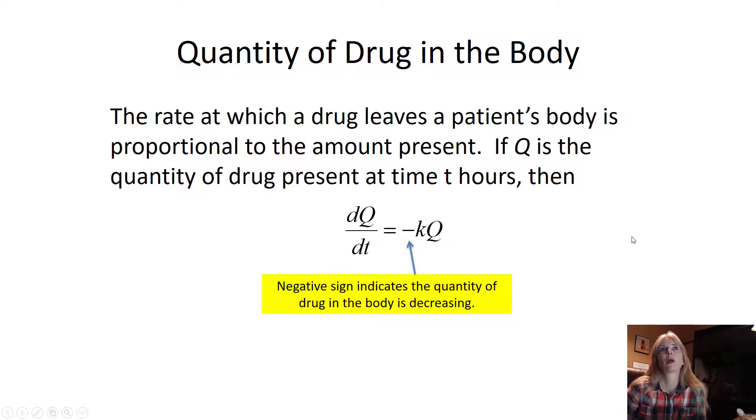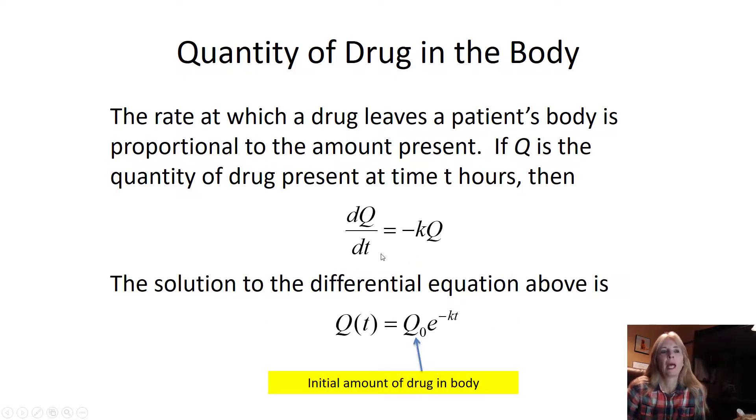You can do the same thing with quantity of drug in the body. The rate at which the drug leaves a patient's body, hence why it's negative, is proportional to the amount that's present, so the quantity at a particular time. And I can write this as a general solution. The initial amount of drug in the body, q sub zero, and e to the negative kt. Because again, this is a decay that it's leaving the body.